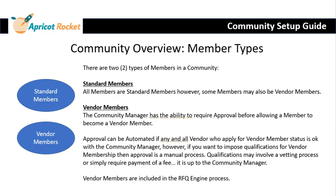With those thoughts in mind, let's talk about the types of members. There are standard members and vendor members. All members have to start off as standard members, but some can also become vendor members. The community manager has the ability to require approval before allowing a standard member to become a vendor member. Approval can be automated if all vendors who apply are automatically approved. However, if the community manager wants to impose qualifications or restrictions for vendor membership, they'll need to go through a manual approval process.